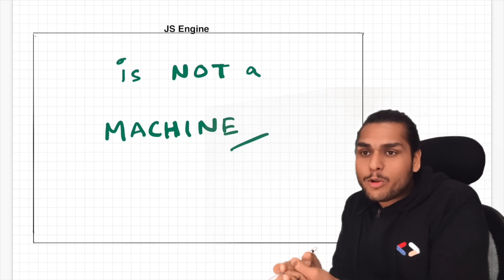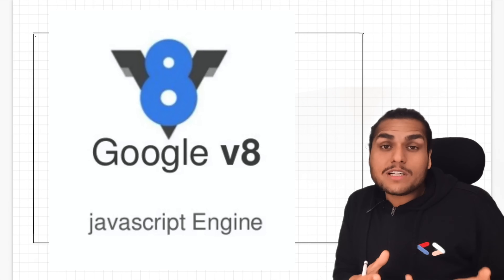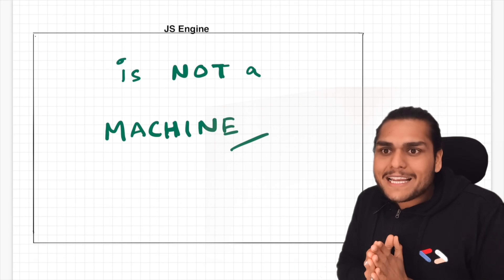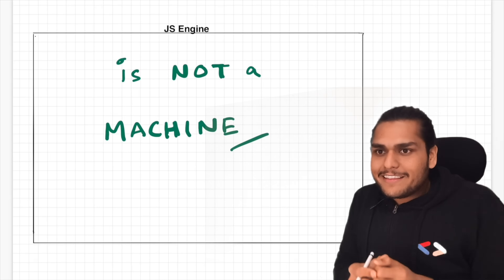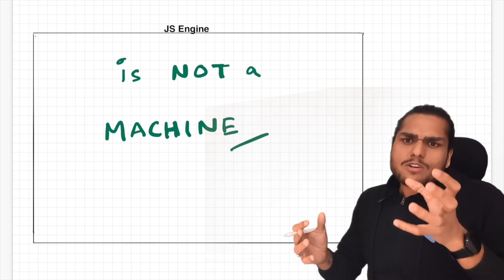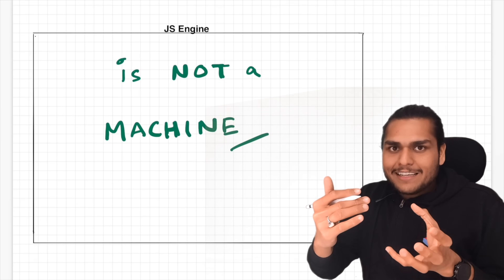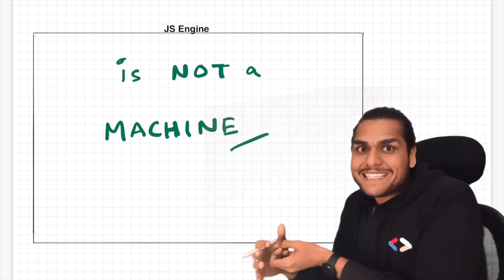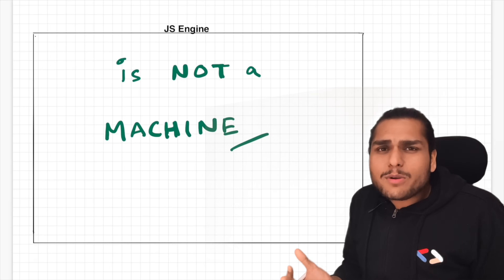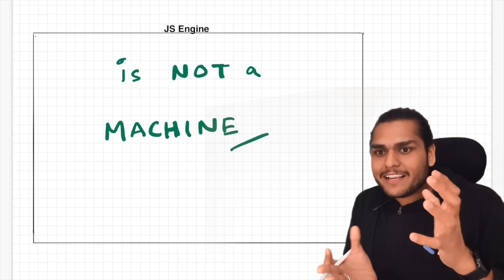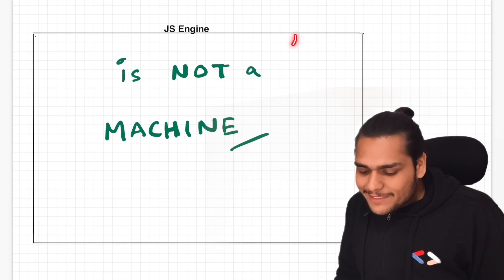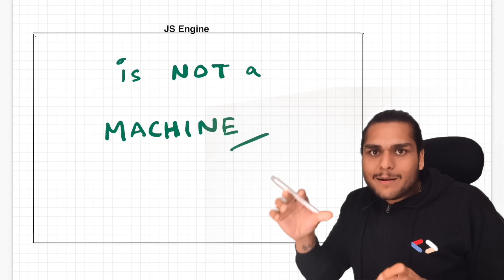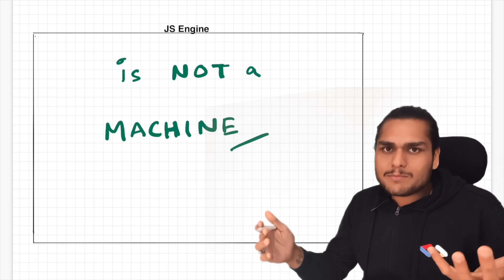JavaScript engine is nothing but a normal program — normal code written in low-level languages. Google's V8 engine, for example, is written in C++. It is a piece of code written by engineers just like you and me. That piece of code, the JavaScript engine, takes in high-level JavaScript code and spits out machine-level code that can be executed by the machine. It's like a normal program.